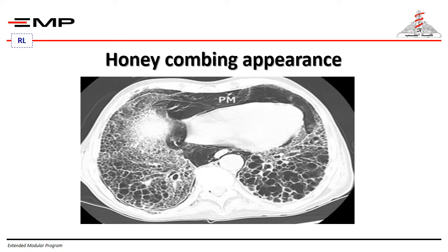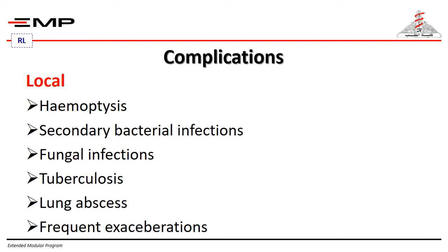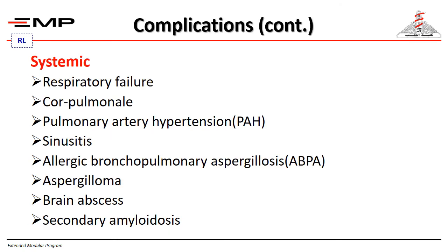Cystic bronchiectasis is obvious and apparent and can show a honeycomb appearance on CT. Local complications include: the suppurative material can erode vessels causing hemoptysis, stasis of secretions causing secondary bacterial or fungal infection, it can be a site for TB reactivation, and local immunity is decreased, leading to lung abscess and frequent exacerbations. Systemic complications include respiratory failure, cor pulmonale with secondary right-sided heart failure, pulmonary artery hypertension, sinusitis, allergic bronchopulmonary aspergillosis, aspergilloma, brain abscess, and secondary amyloidosis — particularly amyloid kidney causing nephrotic syndrome.